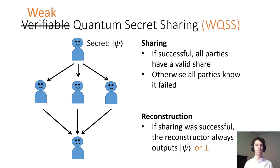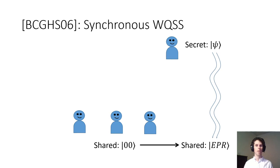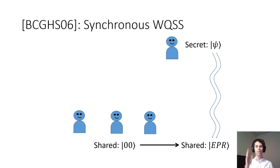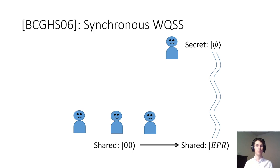As a starting point, let's consider weak quantum secret sharing in the synchronous setting. It turns out that it is enough to construct it just for zero states. Using this, the parties can construct an EPR pair and send one half to the dealer. Then the dealer can teleport their secret into the other half of the EPR pair, which is still shared amongst the parties. We will be able to use a similar trick in the asynchronous setting as well.